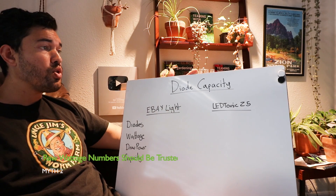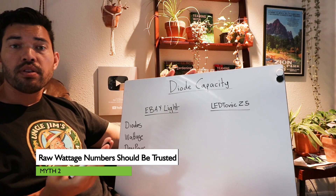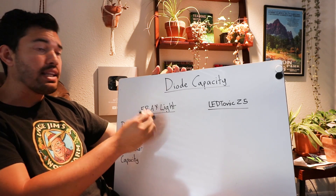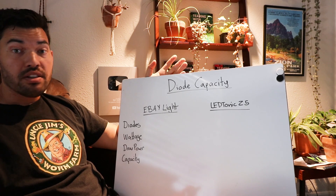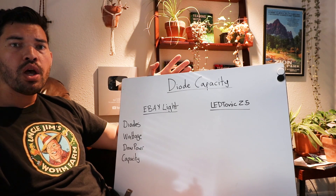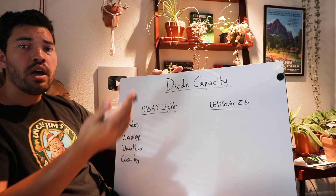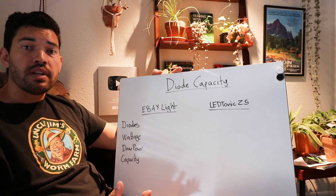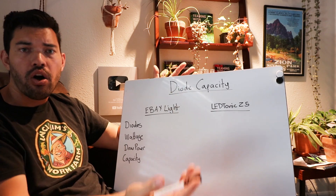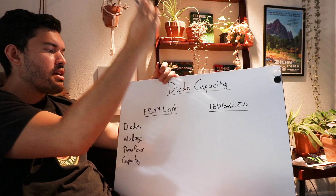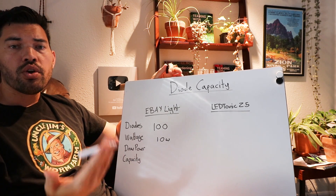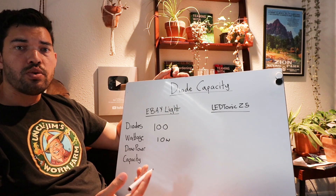For myth number two, we're talking about the way LED companies label their lights. They'll say this is a 1000-watt grow light and it draws this much power, therefore it's amazing. You see this a lot on what I'll call eBay lights — there's a massive market for interesting-design LED lights on eBay. Using the Leadtonic Z5 as a comparison, let's break down what really matters, kind of like how we dug into PPF, PPFD, and photon efficacy. We're going to look at how LED lights should be judged versus how they are judged.